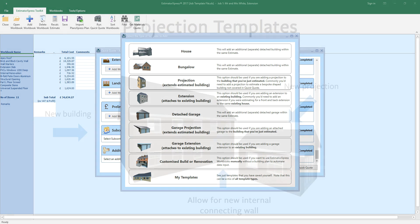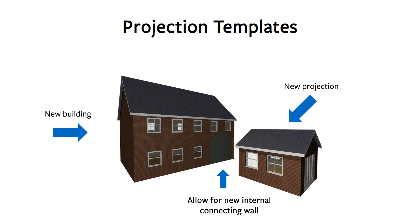For a projection, QuickQuote will allow for the substitution of external wall details with internal connecting walls in the new building you've estimated. It will also allow for the formation of structural openings into the new connecting walls, netting off the internal wall, so a projection template will take account of the materials saved by the opening in the connecting wall.